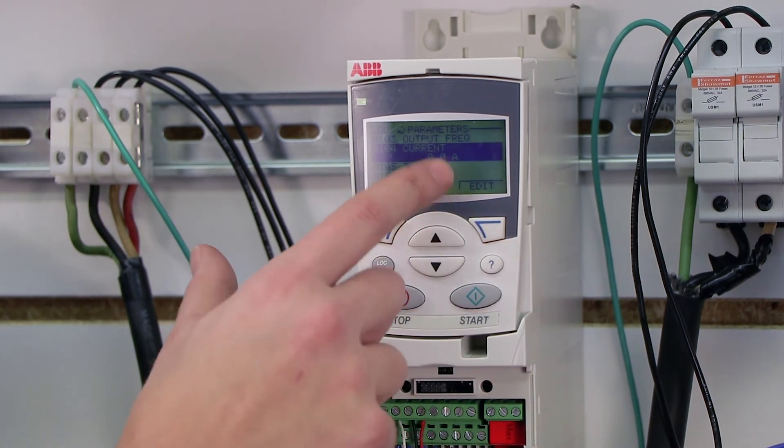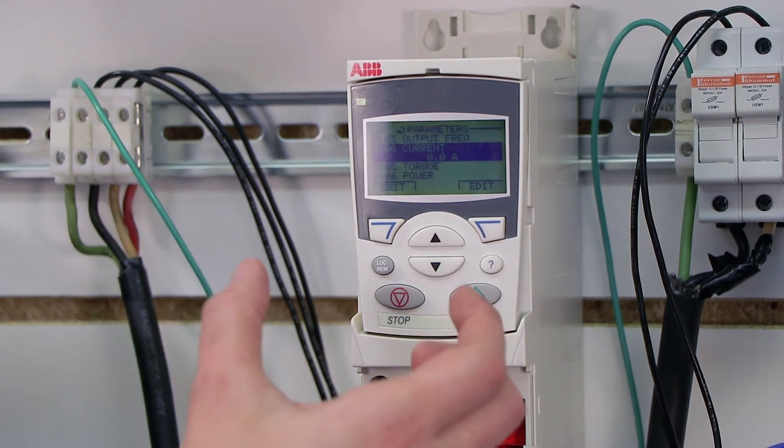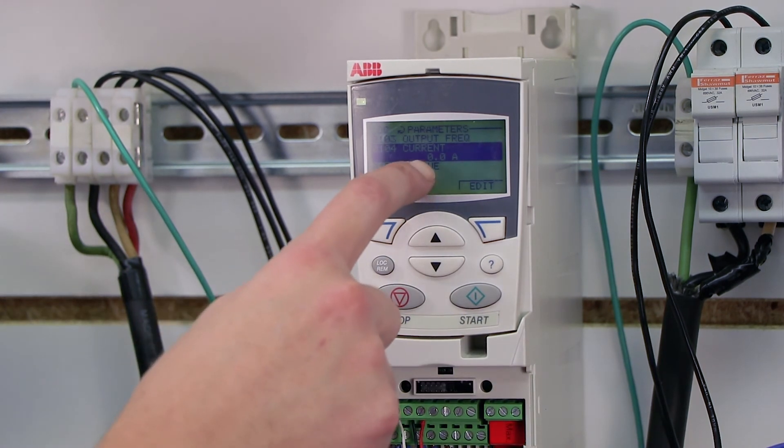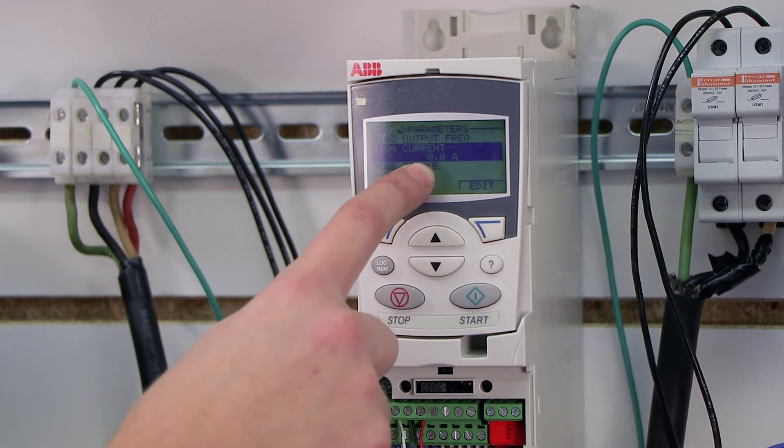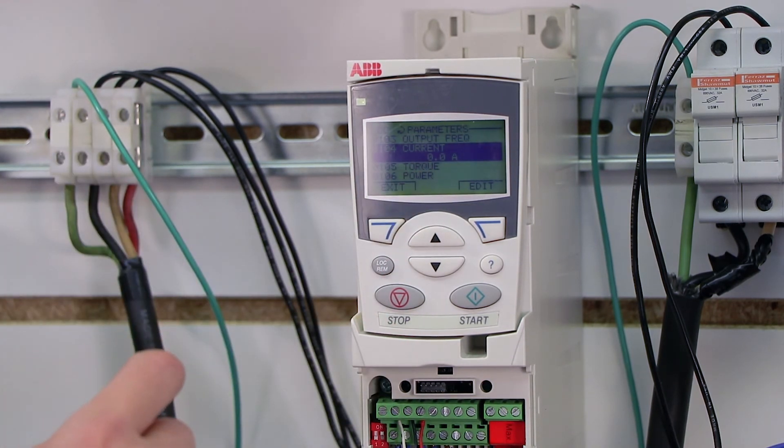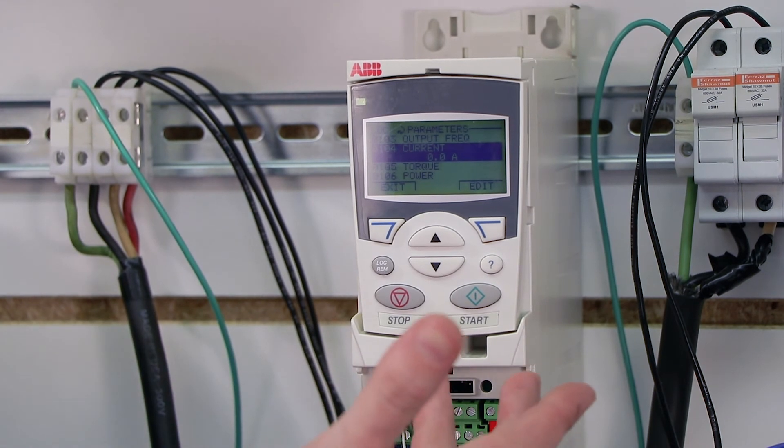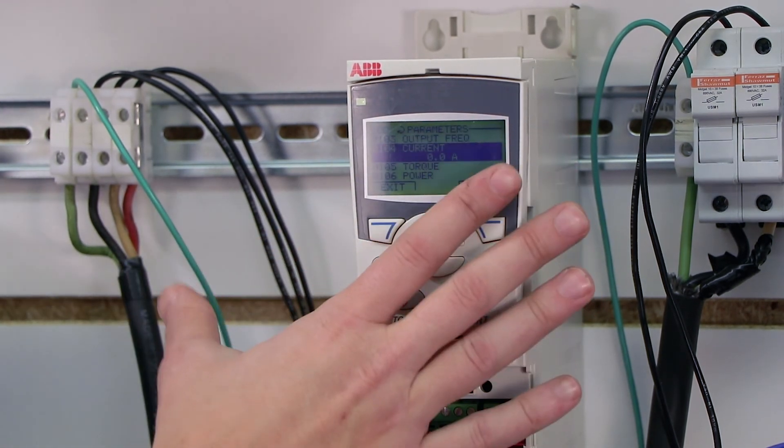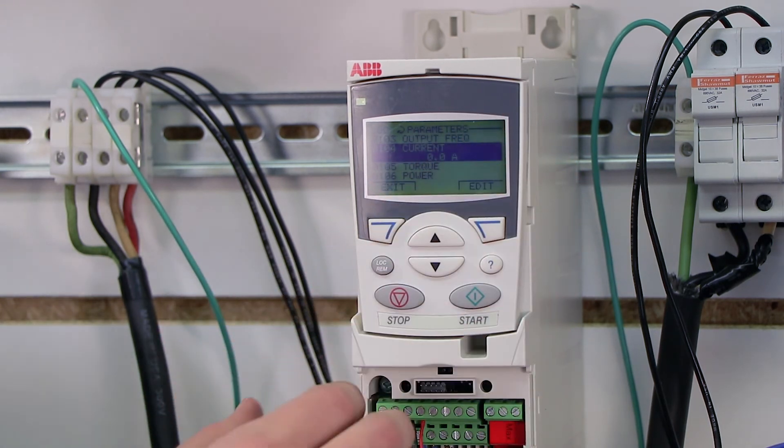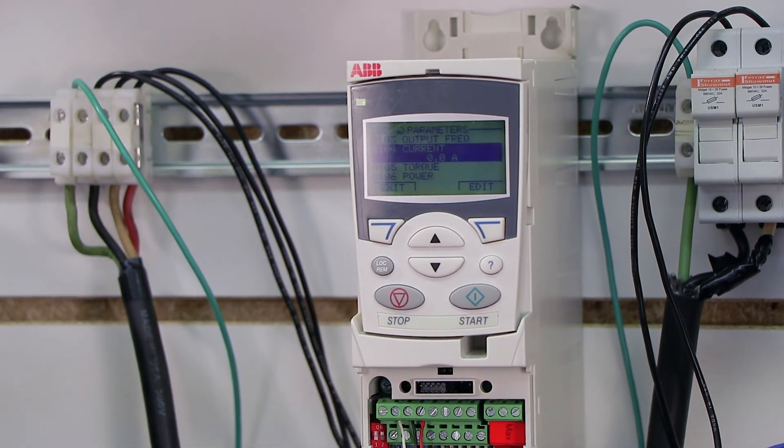Or what you could do is you could actually monitor this current and pull out an amp meter and clip it to your leads and make sure that this current is properly representing actual current. Maybe there's something, some issue with the current sensing circuit in the drive. That's just one example of what you could do, but this is the full input monitoring or output and input monitoring section for the ACS 355 variable frequency drive.